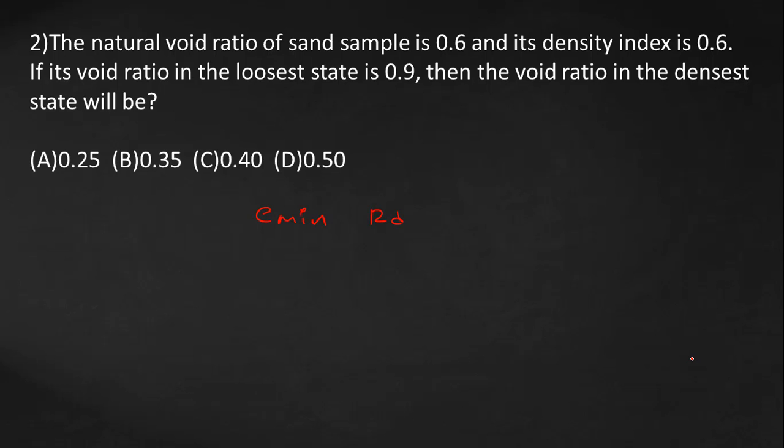From the formula, Rd equals emax minus e by emax minus emin. So 0.6 equals 0.9 minus 0.6 by 0.9 minus emin.